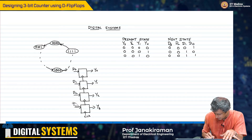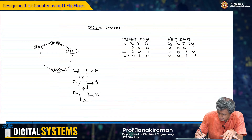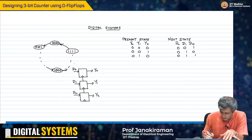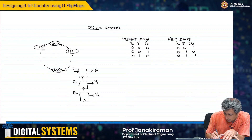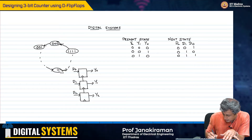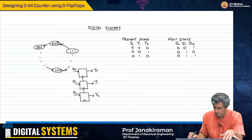For simplicity, I will make this a 3-bit counter instead of a 4-bit counter. It just makes it easier to drive home the point rather than enumerating all 16 states. So from 0, 0, 1, you go to 1, 1, 0, 0, then back to 1, 1, 1, 0, 0, 0.